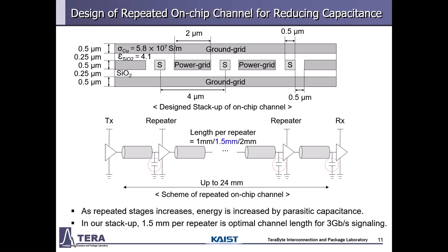Another important point is channel design, because channel design determines energy and latency per unit length. For the on-chip channel, all physical dimensions are designed considering chip process. As shown in the figure, the signal is routed between power and ground grids to reduce crosstalk. The on-chip channel must be repeated over 24mm due to high channel resistance. As the number of repeaters increases, latency decreases but energy consumption increases due to the parasitic capacitance of drivers. In our design, 1.5mm per repeater is the optimal channel length for 3 Gbps signaling.